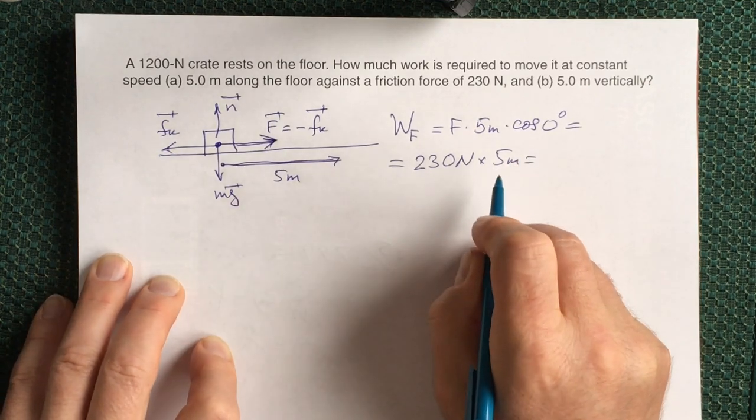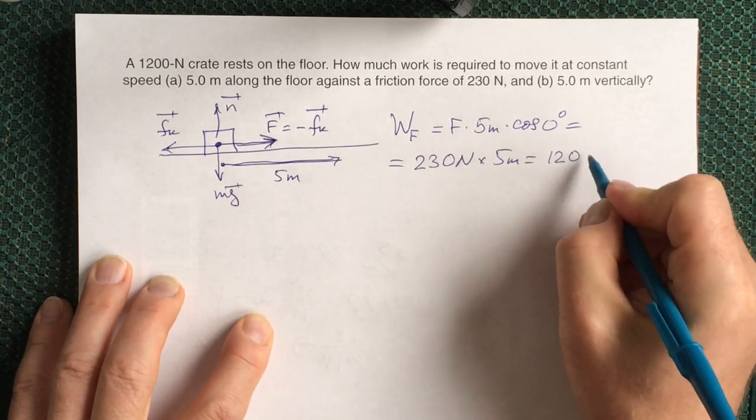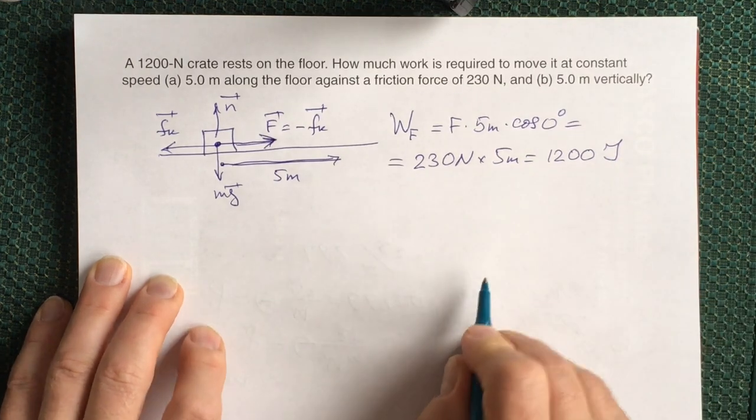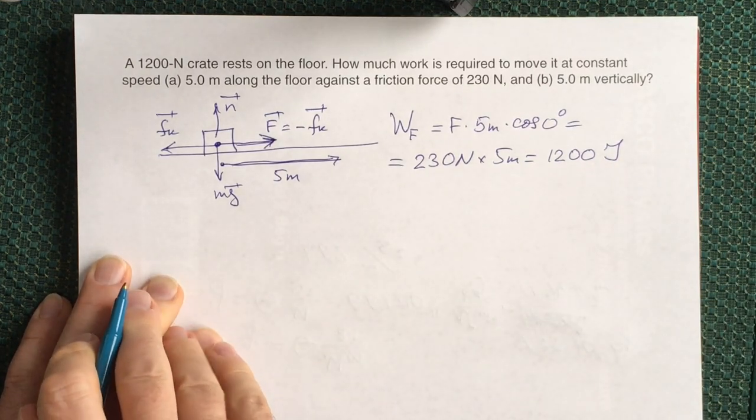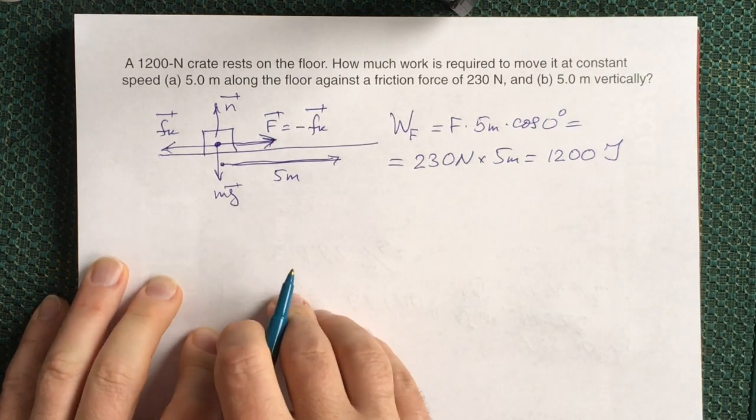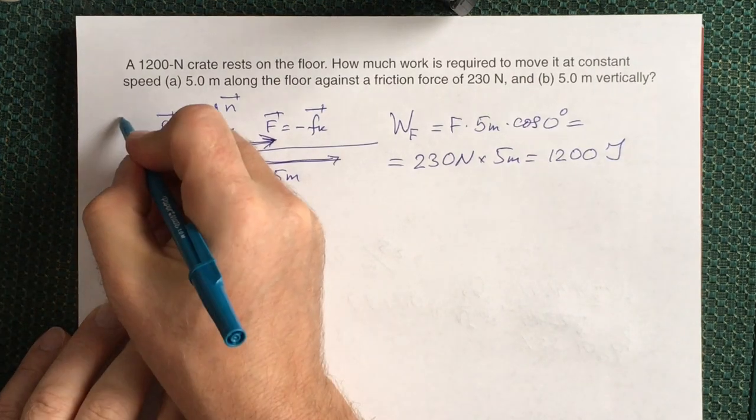If you multiply them you will have 1200 joules. This is the work you have to do to move horizontally this crate. This is part A.